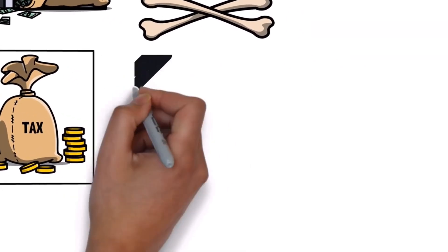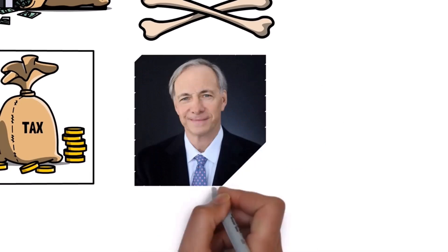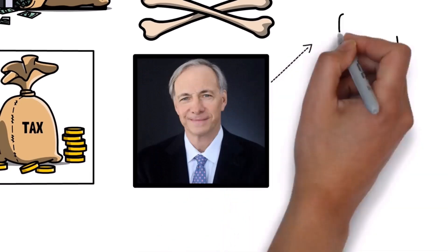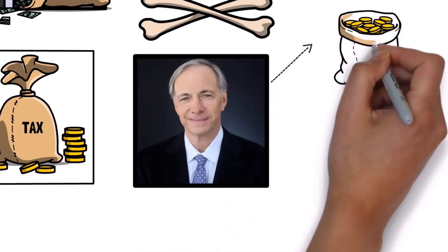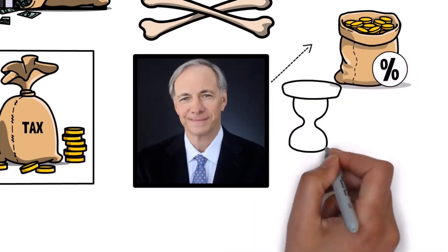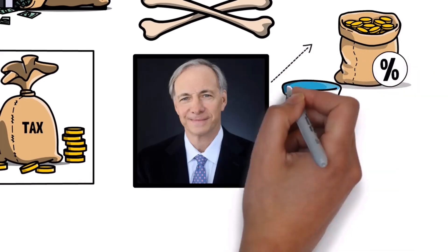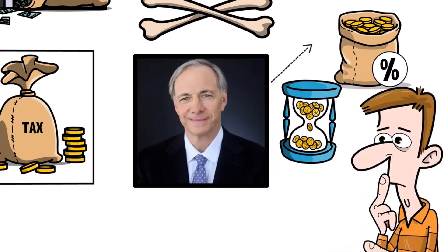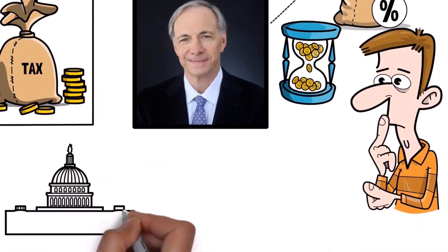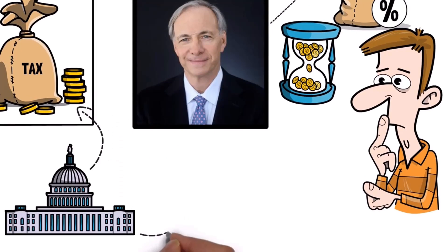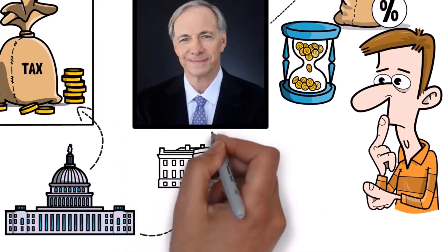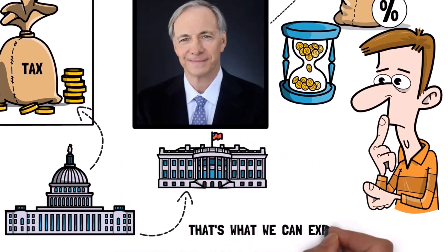Ray Dalio points out that, just like people and businesses, governments that borrow money have to make regular payments on that debt and eventually pay back the actual borrowed amount. This can be tough. The difference is that governments have the power to collect money through taxes and create more money through the central bank. So, that's what we can expect to happen.